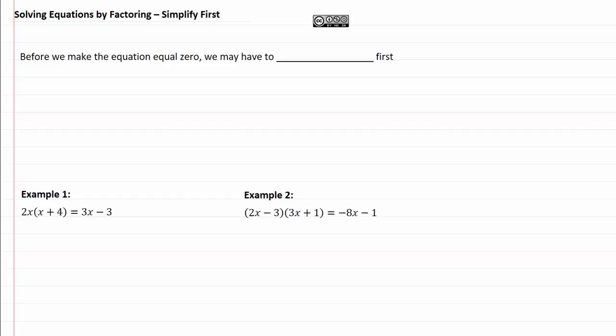Solving equations by factoring. Simplify first, before we make the equation equal to zero, we may have to simplify first, meaning that we're going to have to get rid of the parentheses that are in this.